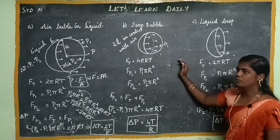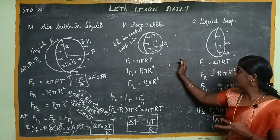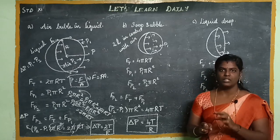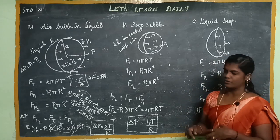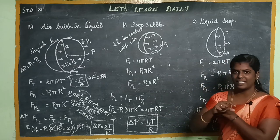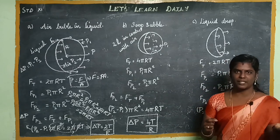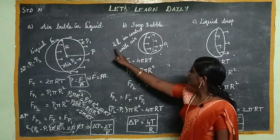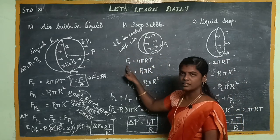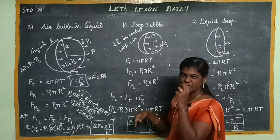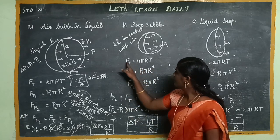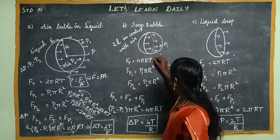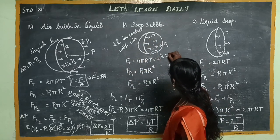Next is the soap bubble. A soap bubble has two liquid layers surrounding air. We can consider the soap bubble in air with two liquid layers, so we change the excess pressure formula by multiplying the surface tension term by 2, giving 2 into 2πRT.